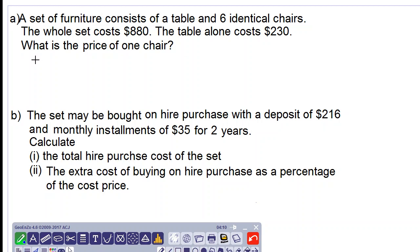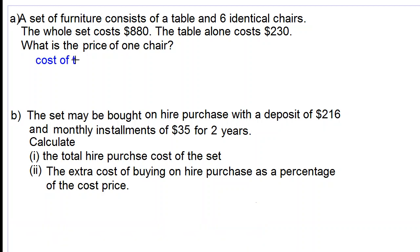So as you can see, the cost of table plus cost of six chairs is $880.